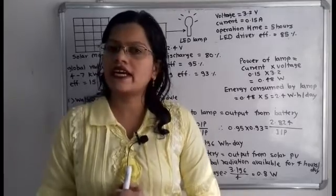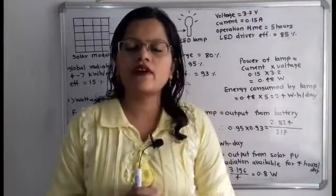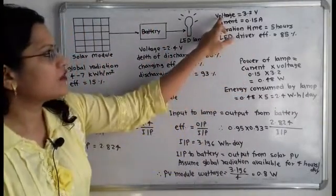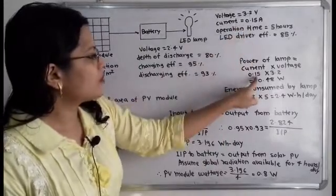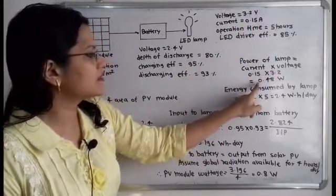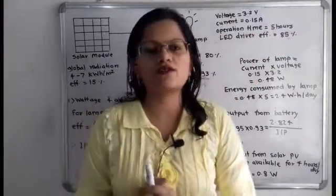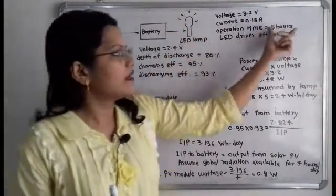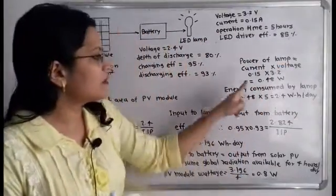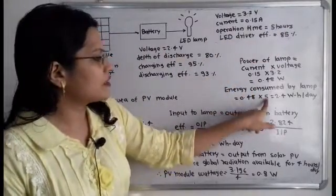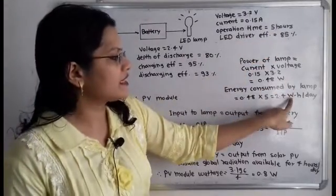First, let us calculate the energy consumed by the lamp. Power of the LED lamp equals voltage multiplied by current: P = V × I = 3.2 × 0.15 = 0.48 watt. The operating time is 5 hours. So the energy consumed by the lamp is power multiplied by time: 0.48 × 5 = 2.4 watt hour per day.